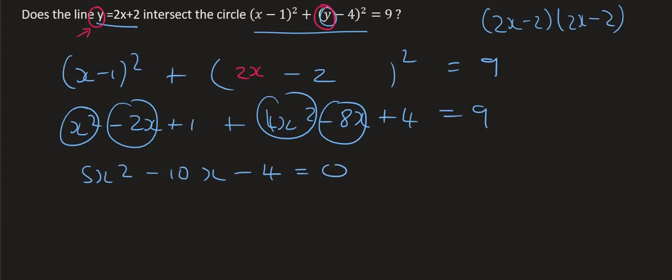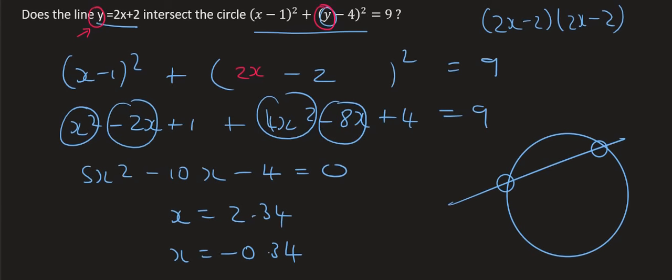We then use the quadratic formula, and once you've done the quadratic formula you should get answers of 2.34 and negative 0.34. So does the line cut the circle? Yes, and because we've got two answers it means it cuts it in two different places and so we would call that line a secant.